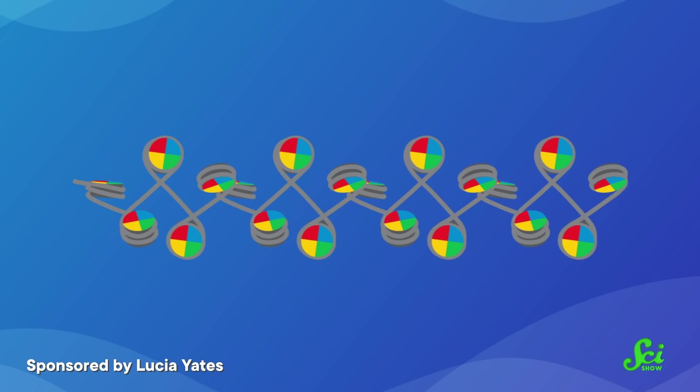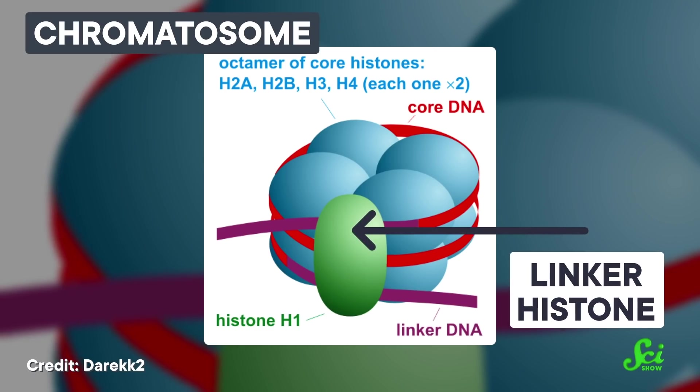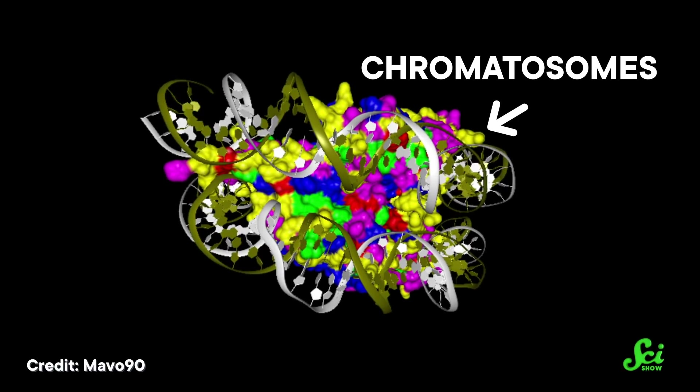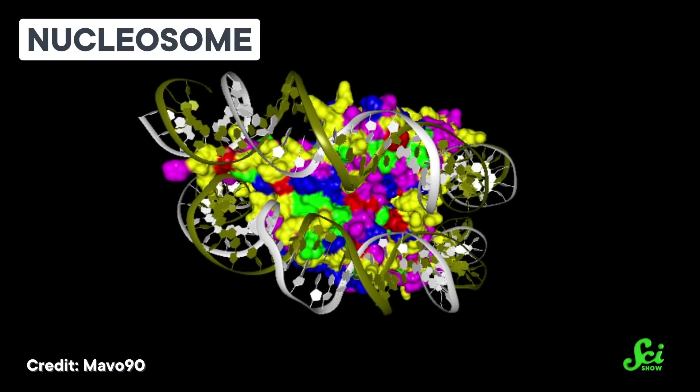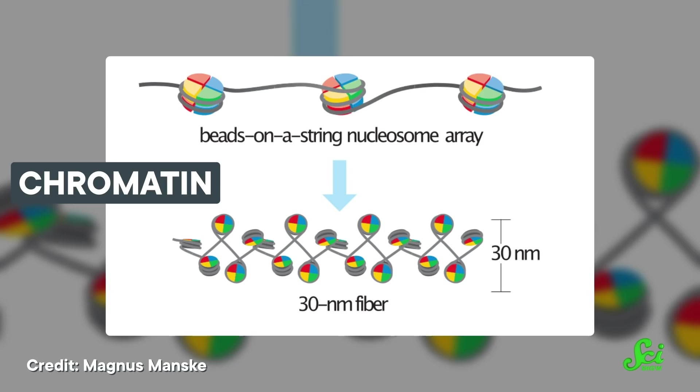you're left with a pile of yo-yos with all the string tucked away. Each of these yo-yos is also bound to an additional type of histone called a linker histone to form a complex called a chromatosome. Each chromatosome plus the stretch of DNA linking it to the next one forms a nucleosome. An entire chromosome's worth of DNA ends up in nucleosomes clustered together in a highly ordered structure of yo-yos called chromatin.